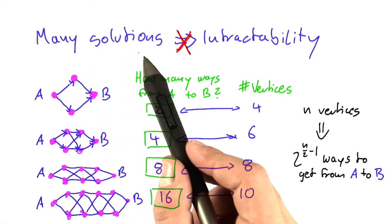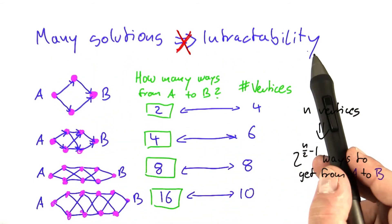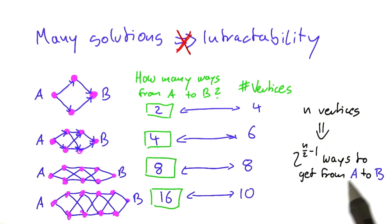But this means that having many possible solutions cannot mean intractability, because here is a case where we do have many possible solutions. There are exponentially many ways to get from A to B. But if we ask an algorithm to figure out the shortest one, it doesn't have to consider an exponential number of solutions, because otherwise there would be no polynomial time algorithm for shortest paths.